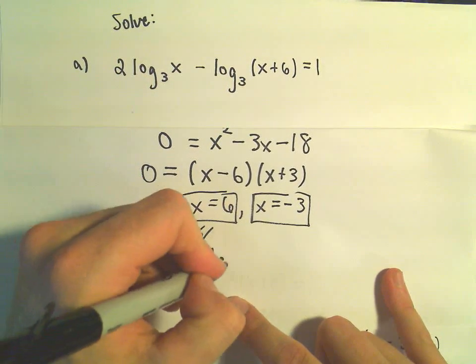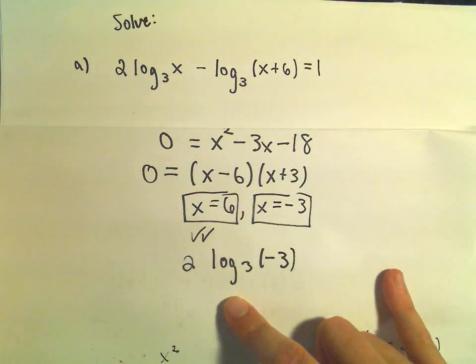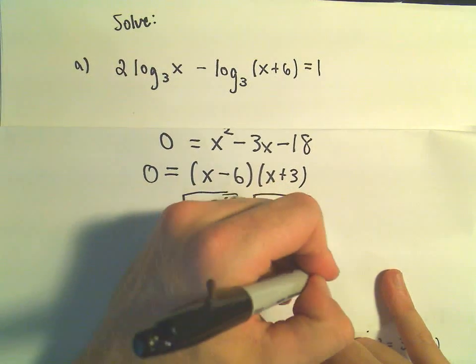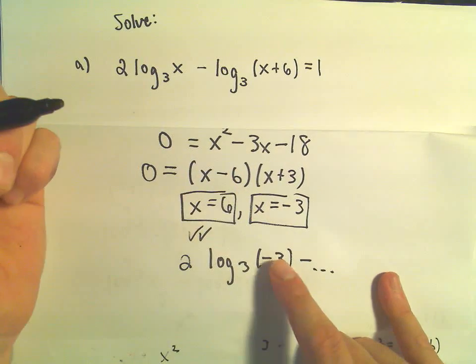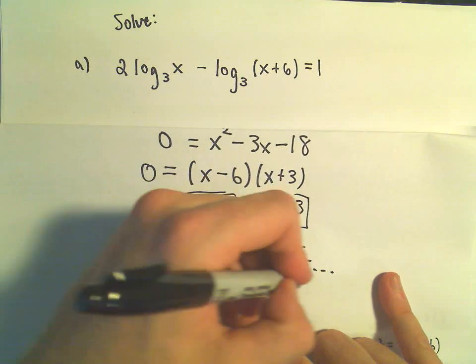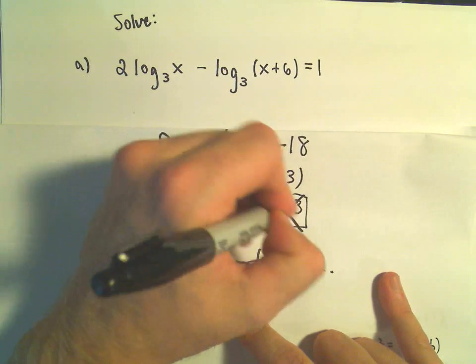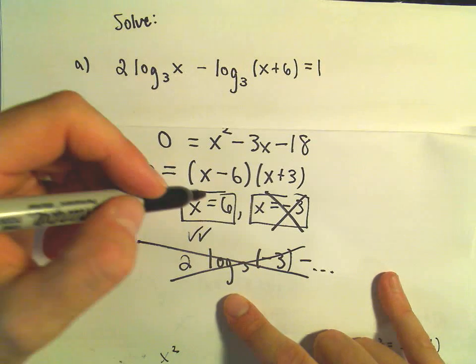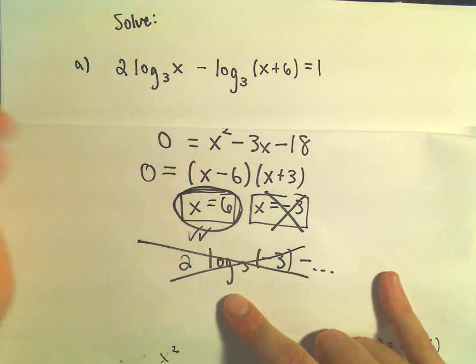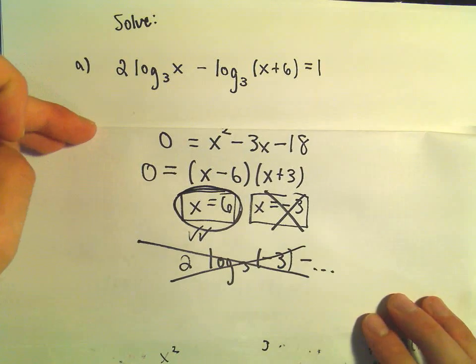we would end up with 2 times log base 3 of negative 3 minus some other stuff. But already, because we have this negative inside of a logarithm, that is bad. And that means x equals negative 3 is what's called an extraneous solution. So x equals 6 would be our only solution in this problem.